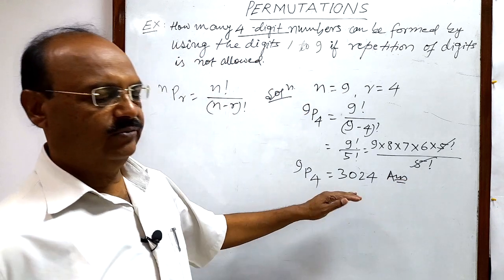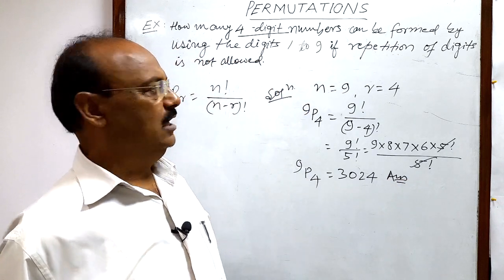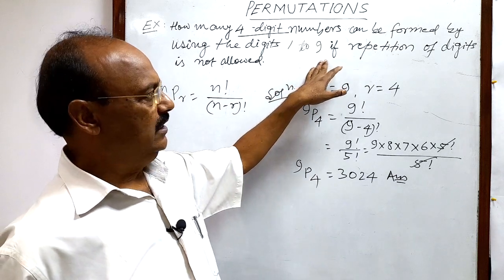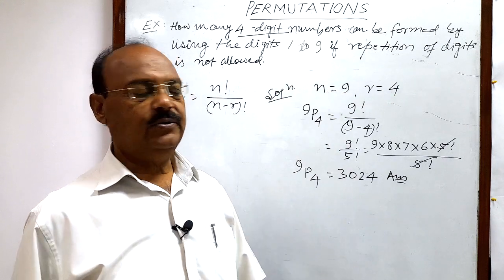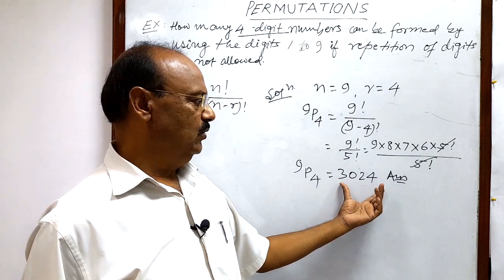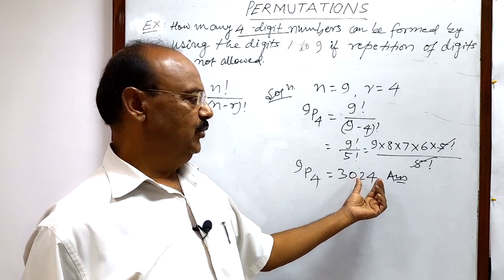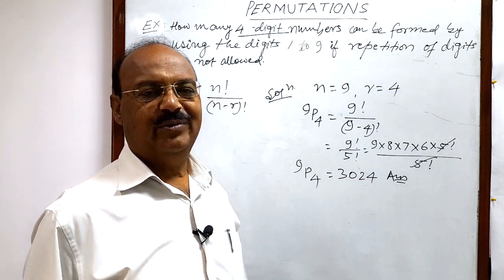This means total number of four-digit numbers which can be formed with the help of these nine digits when repetition of the digits is not allowed—the answer is 3024. 3024 such numbers can be formed.